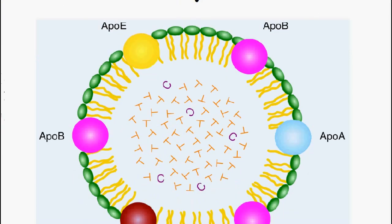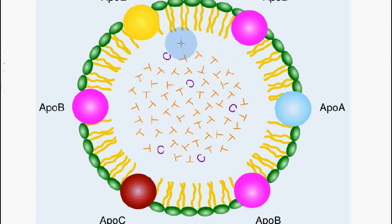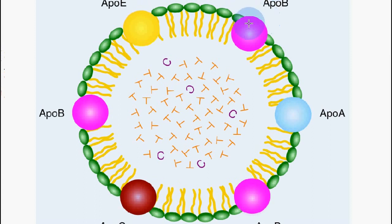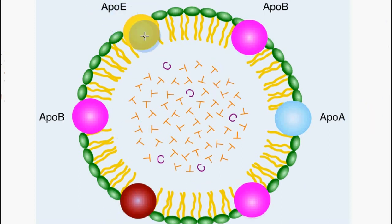Here we have a simplified drawing of a chylomicron. We can see the inside of the chylomicron is high in triglycerides and there's also a low amount of cholesterol. The outside consists of phospholipids and apolipoproteins — apolipoprotein A, apolipoprotein B, apolipoprotein C, and apolipoprotein E.